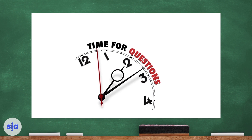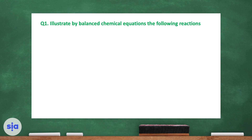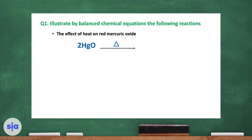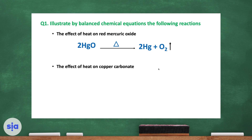Dear students, time for questions. Question one: illustrate by balanced chemical equations the effect of heat on red mercuric oxide. Mercuric oxide, with the heat triangle symbol, breaks down into mercury and oxygen gas. Notice the equation is balanced: 2 mercury molecules on each side, 2 oxygen molecules on each side. The upward arrow means gas is evolving.